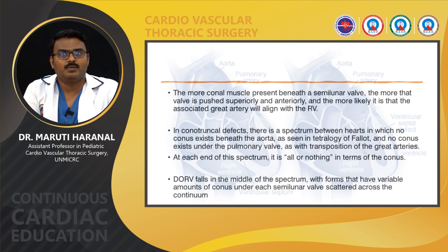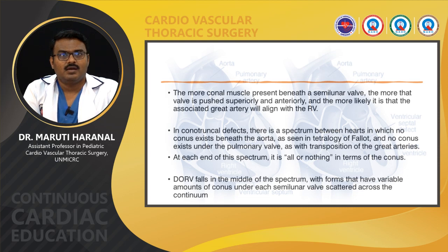In conotruncal defects, there is a spectrum between hearts in which no conus exists beneath the aorta, as seen in tetralogy of Fallot, and no conus exists under the pulmonary valve, as seen in transposition of great arteries. At each end of the spectrum, it is all or nothing in terms of the conus. DORV falls in the middle of the spectrum, forming variants that have variable amounts of conus under each semilunar valve scattered across the continuum.